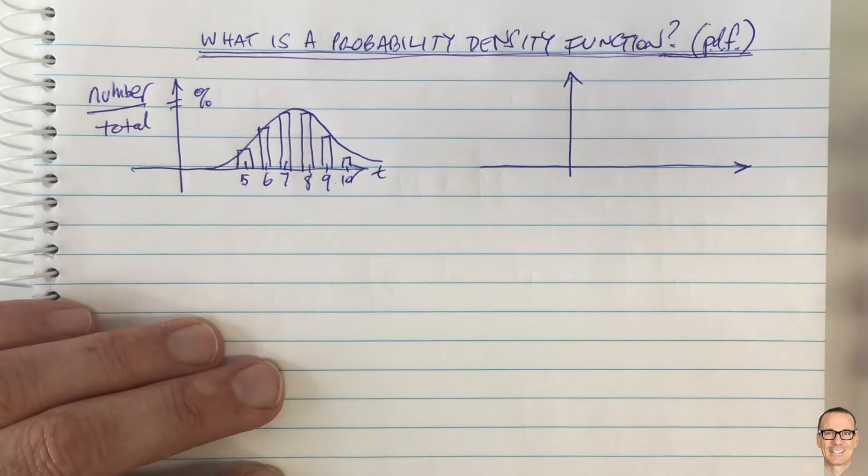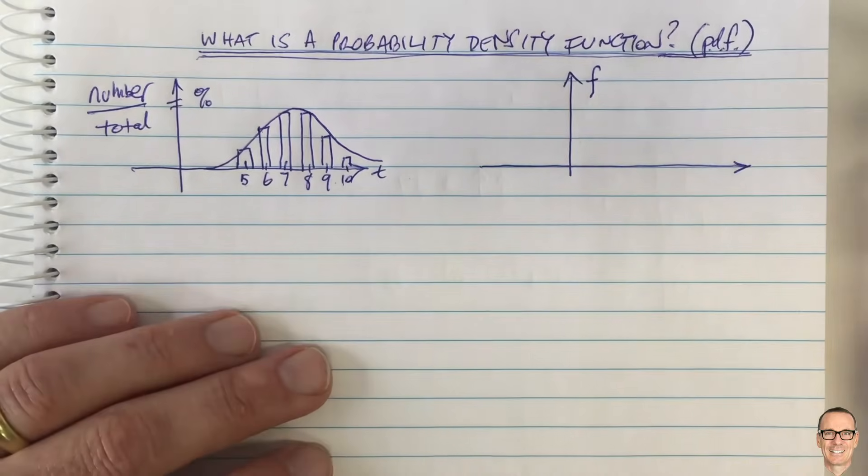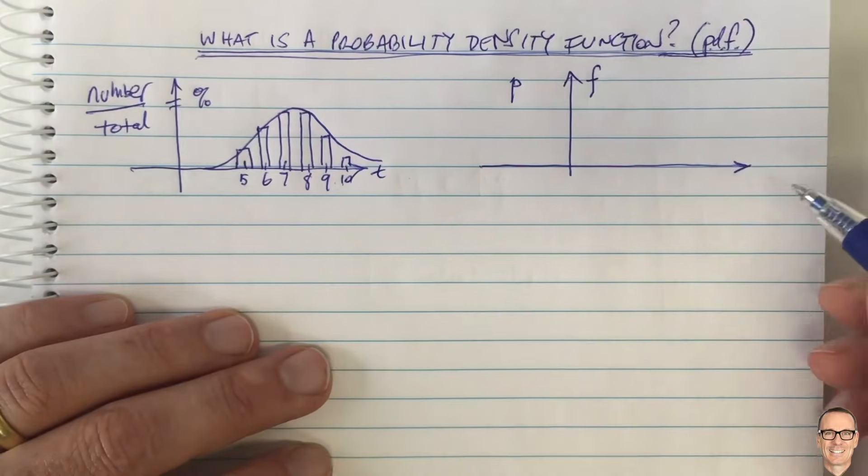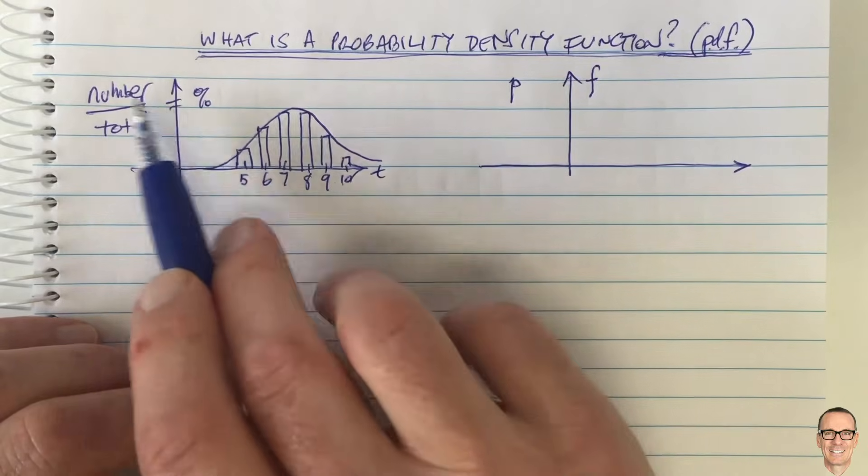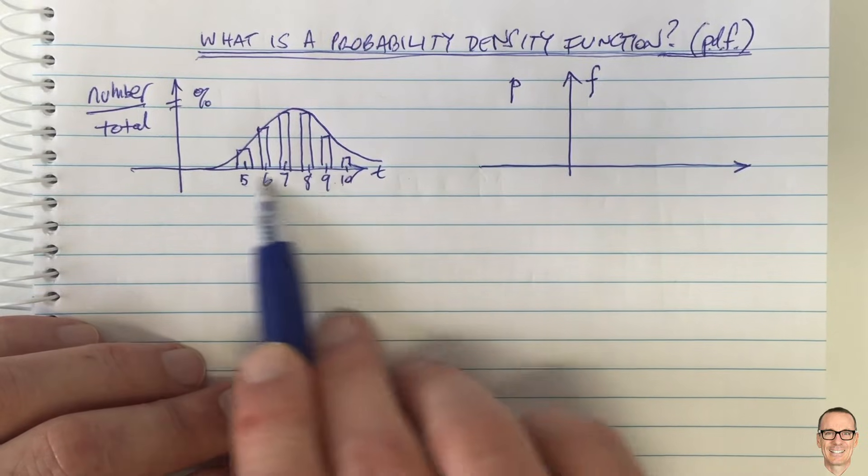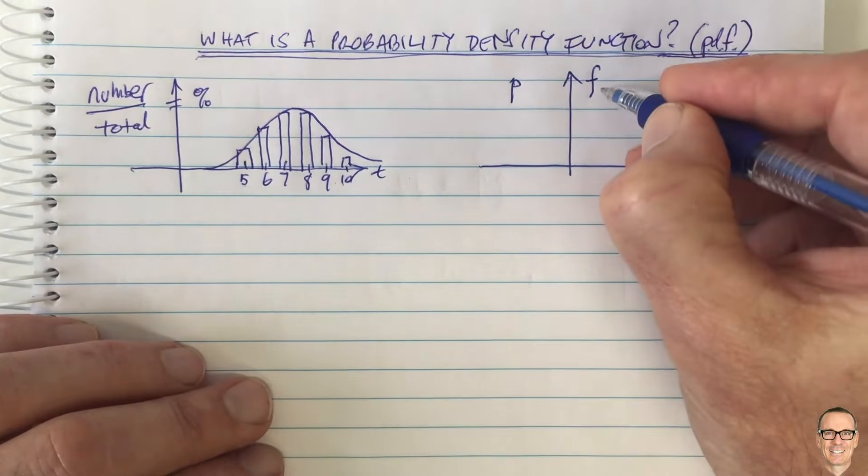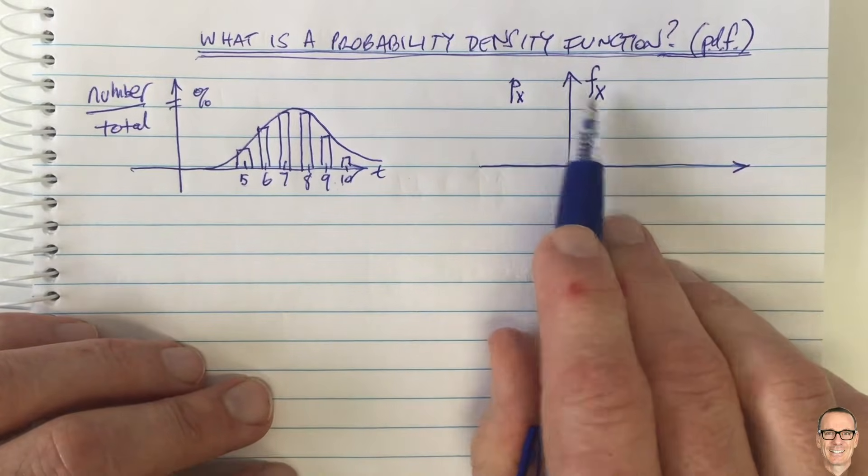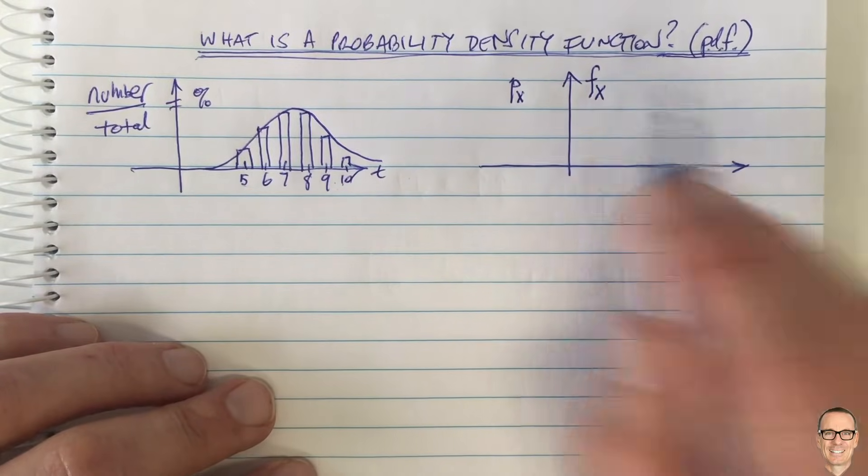So let's say you have a random variable X, and then you're going to have a probability density function. Now, some people use little f for the probability density function. Others use little p. I prefer to use little f. Now, let's say your random variable is capital X. In this case, x was the time it takes to travel between Los Angeles and San Francisco. We had that as t, but in general, let's use the x for the random variable. And we denote that with a capital X as a subscript on our function. This is a function of something. It's a function of the values that x can take.